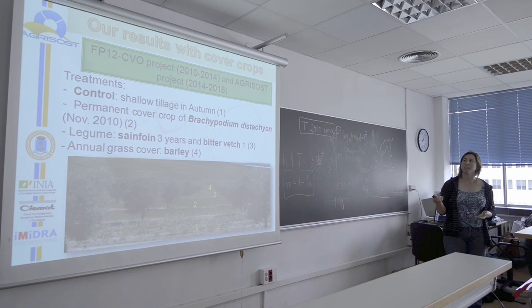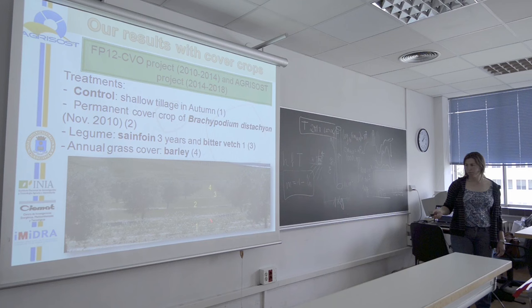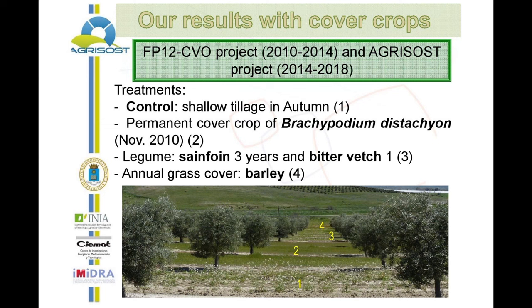Now I'm going to present some of our results from one project that finished last year, and a new project we are working on for the next three years. The first treatment is the control: only one pass of tillage at 15 centimeters of the surface. The second is the permanent cover crop — Brachypodium distachyon — seeded in November 2010, with only mowing in spring.